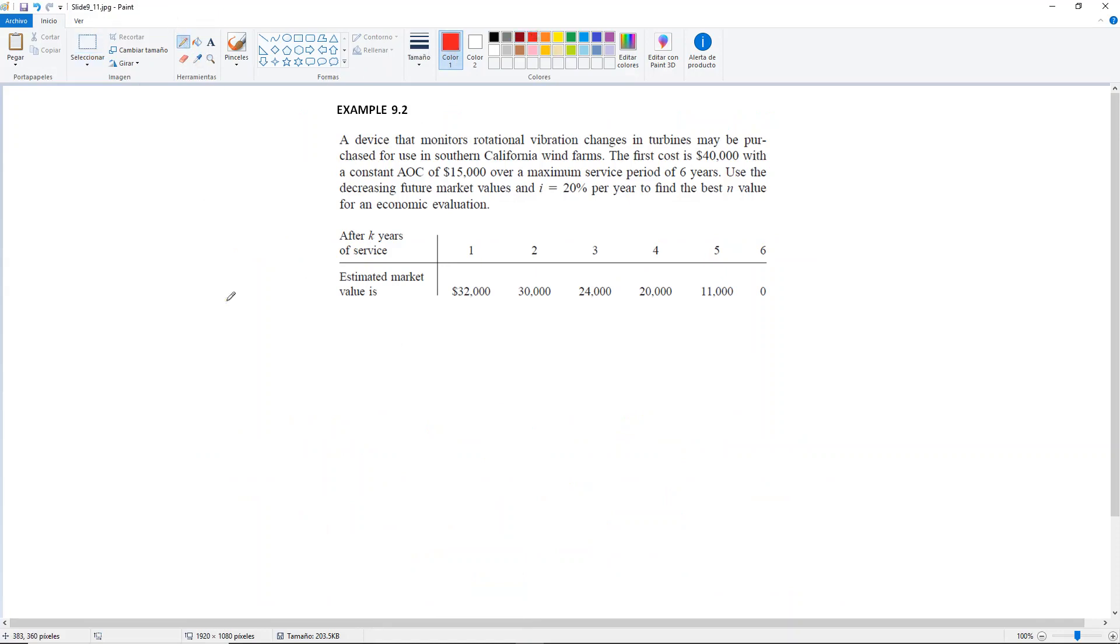So here you are given, it says that it's a constant annual operating cost. Let me mark that because that's a keyword. A constant annual operating cost of $15,000. Then it says that the service period is going to be six years. Here at the top, it's telling us that the first cost will be $40,000.